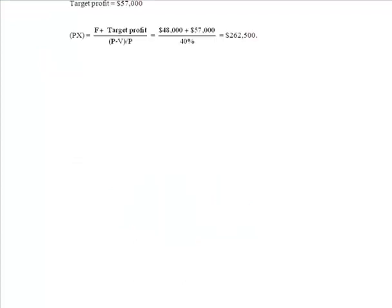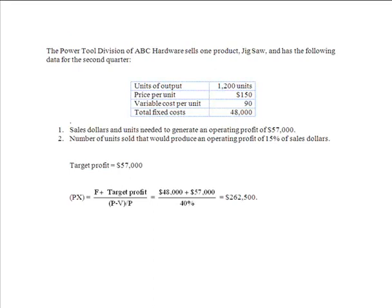Now what I know is that I need to sell $262,500 worth of jigsaws in order to profit $57,000, because that's going to give me the $48,000 to cover my fixed costs plus my $57,000 in profit. How many units do I have to sell to generate that $262,500?